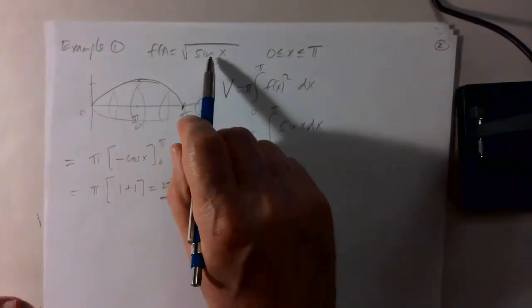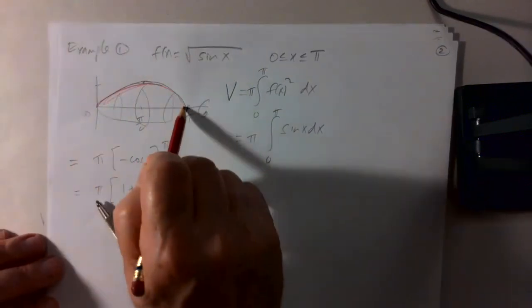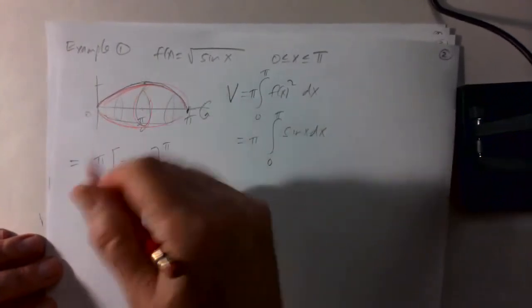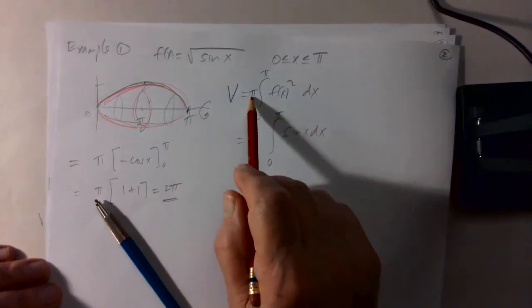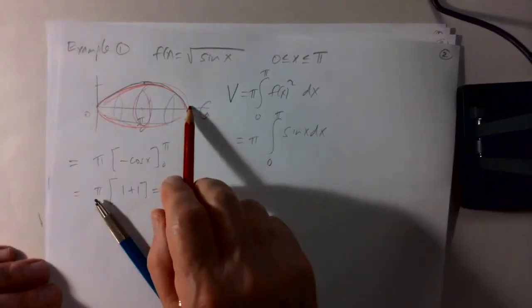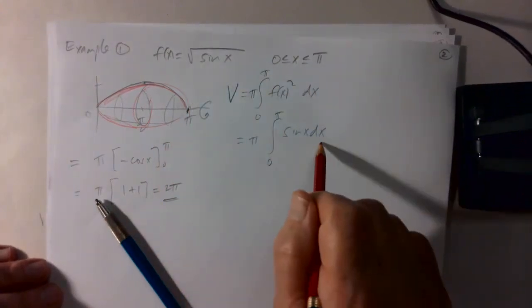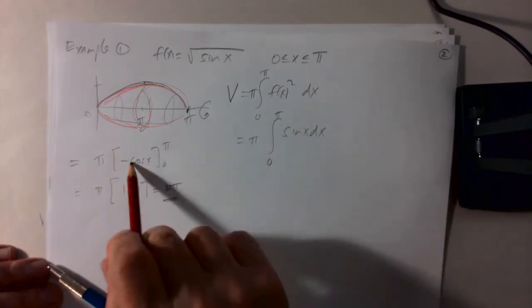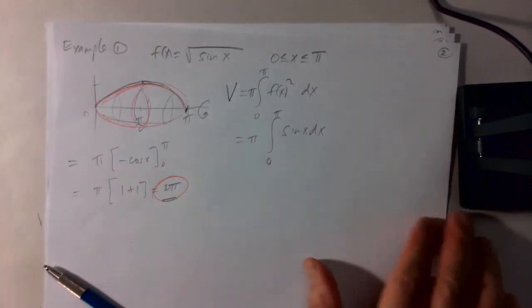For the first example, take the function y = √(sin x) from 0 to π. When you rotate it around the x-axis, it sweeps out a solid. The volume is π times the integral from 0 to π of (√(sin x))², which simplifies to π ∫₀^π sin x dx. The integral of sin x is −cos x, so evaluating gives a volume of 2π.